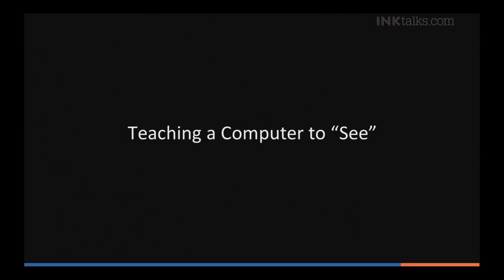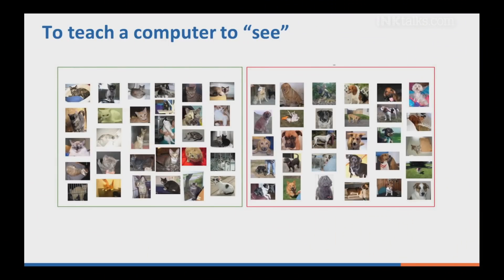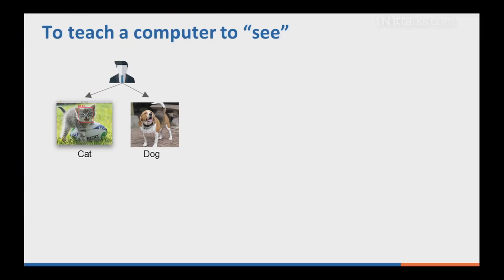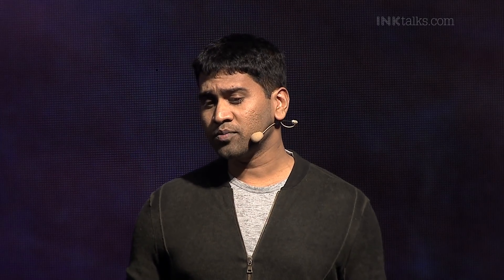Let's take an example — figuring out what is in an image. In this problem, we first collect a huge database of images. This data is available to download from publicly available datasets. Once we have this database, we ask humans to tag them, to tell what is in each particular image. Once we have those tags and images, we pass it through an AI algorithm. We get a model out, and then use that model in deployment to make a prediction for a new incoming image.